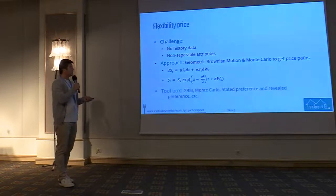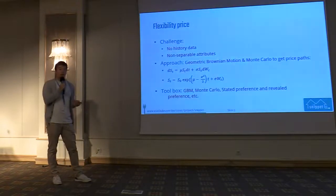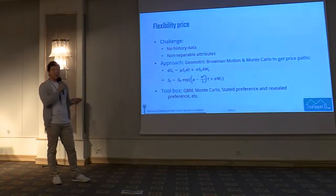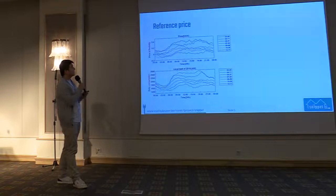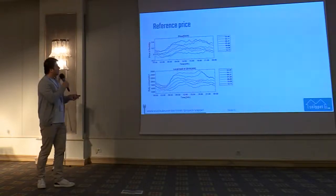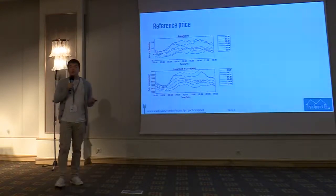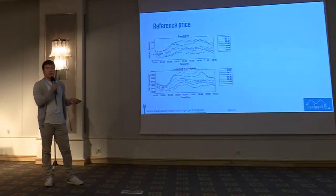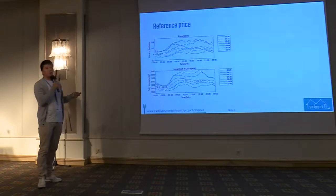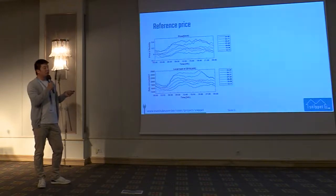In our study, we generate one million similar price paths and select them by similarity compared to our local consumption profile. Here is an example of selected seven-day reference prices. We have one million reference price paths, and using one year's consumption profile, for each day we match it with that million price paths and select the closest one to represent the flexibility value for that day in the local community.